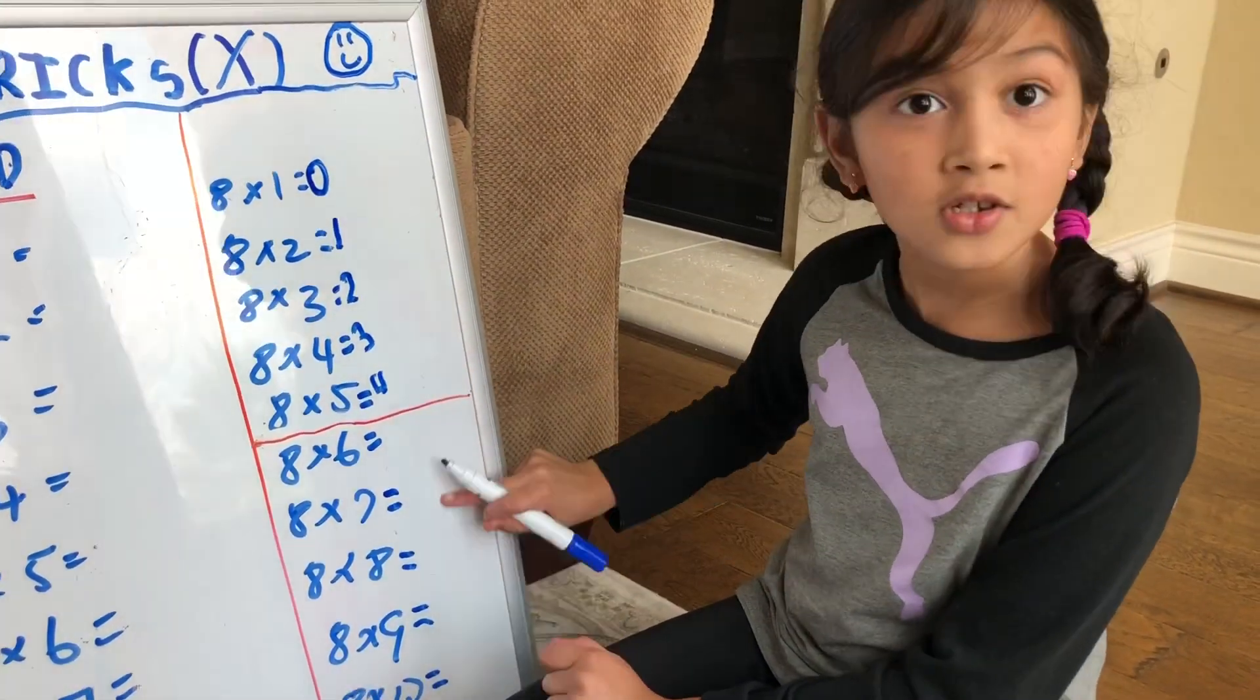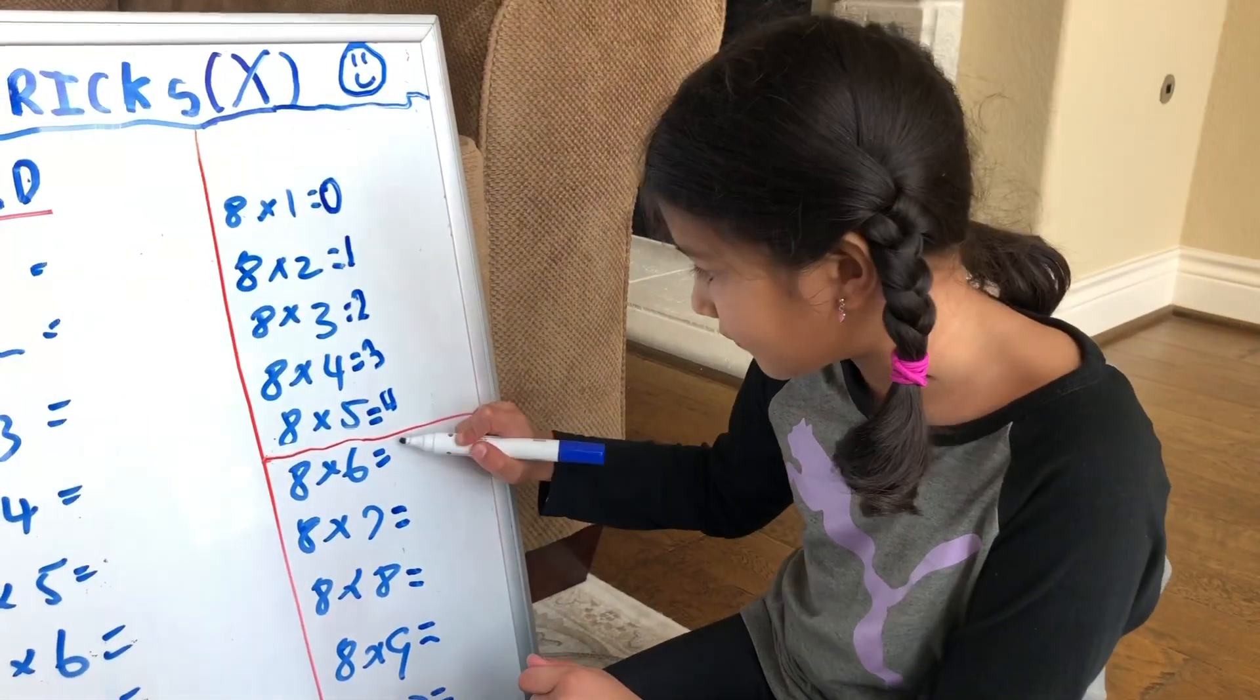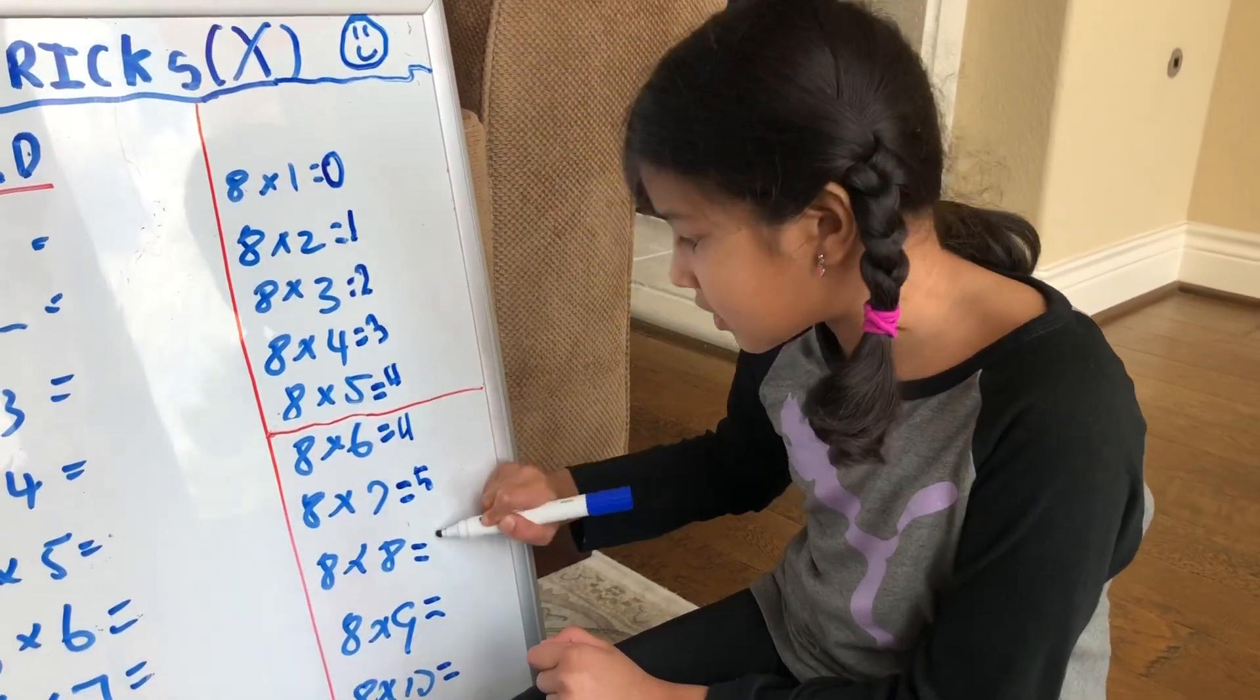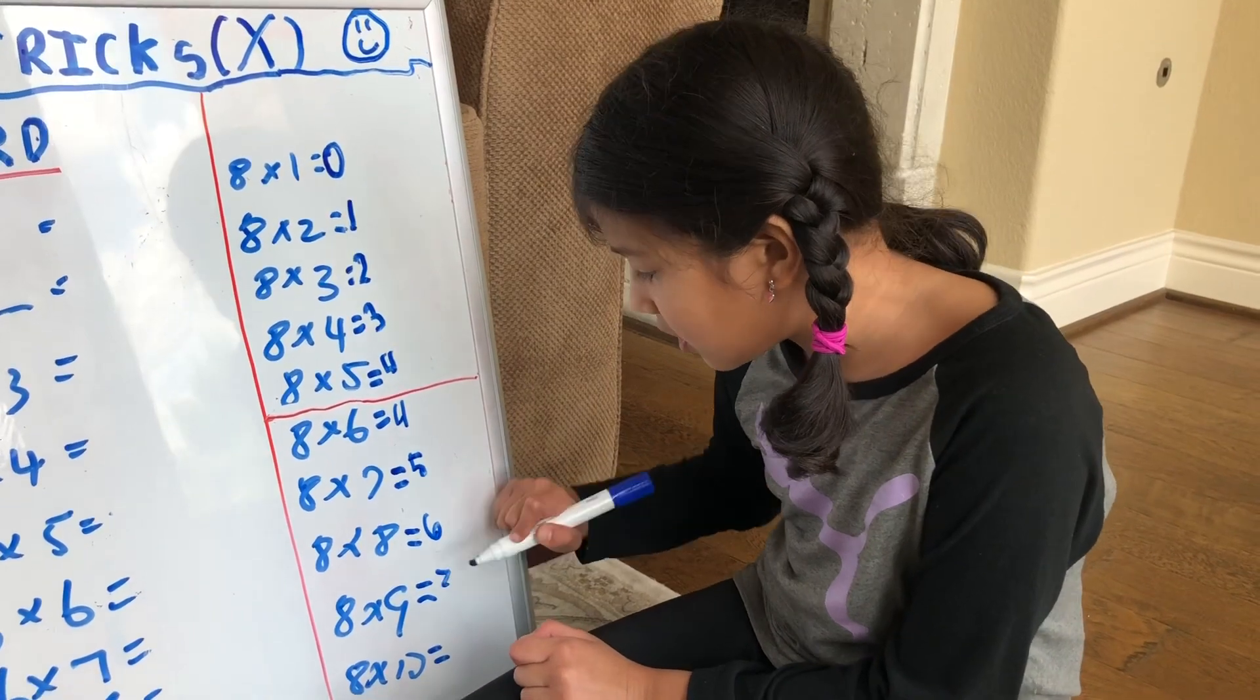Then you're going to move on to the other half. That will be 4, 5, 6, 7, 8.